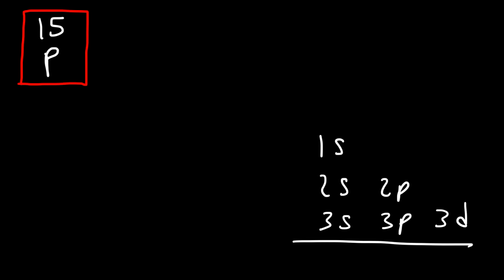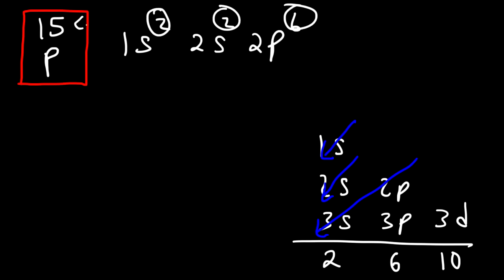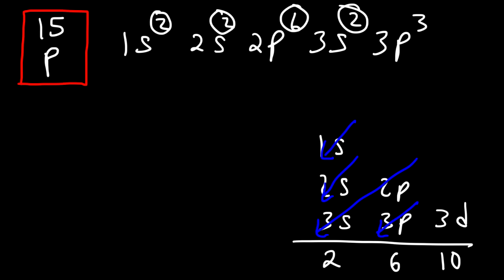For the element phosphorus, I don't need to go past 3P. S can hold 2 electrons, P can hold 6, and D can hold 10. Starting with 1S2, then 2S2, then 2P6 — that gives us 10 electrons. Then 3S2 brings us to 12. We then move to the 3P sublevel and stop at 3P3, because 2 plus 2 plus 6 plus 2 plus 3 equals 15. That is the electron configuration for phosphorus.